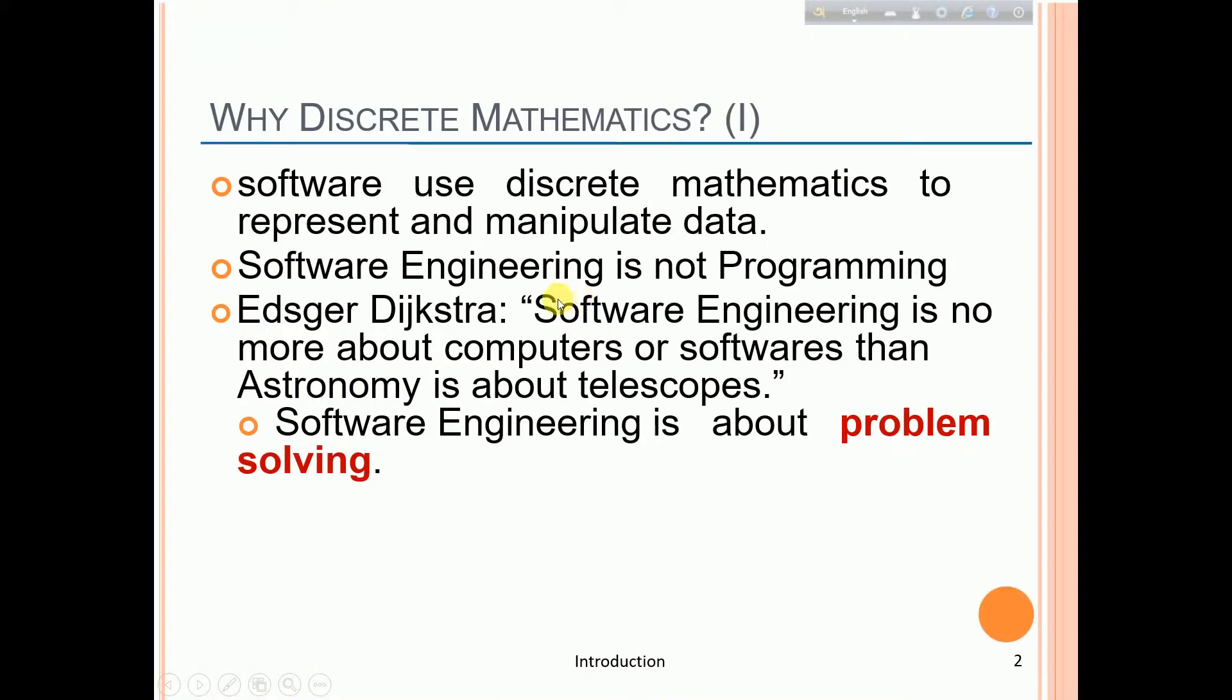First of all, we need to know why discrete mathematics is needed. Discrete mathematics is needed because software use discrete mathematics to represent and manipulate data. Software engineering is not about just programming, computer or software. Software engineering is about problem solving. Problem solving is all about mathematics. Mathematics is the heart of problem solving.